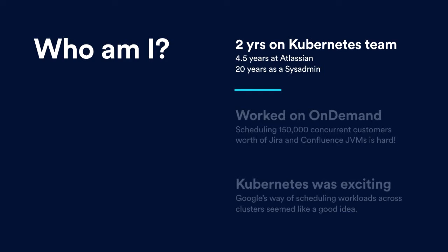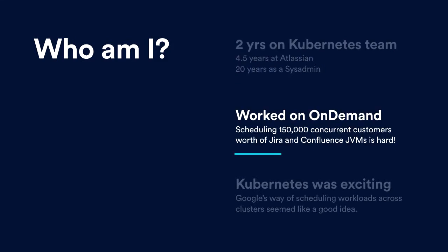In that time I've been a sysadmin, a network engineer, security engineer, a help desk person — pretty much most of the things that you could possibly be, I've had a crack at. While I've been at Atlassian, I worked on on-demand. So if you've used Jira or Confluence in the cloud, I was probably working on making sure the systems that ran that stayed up.